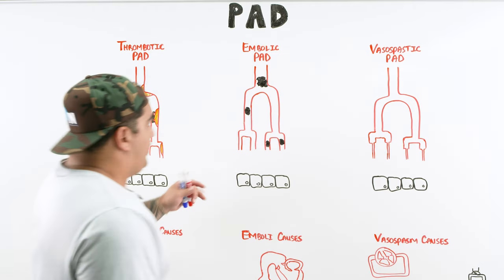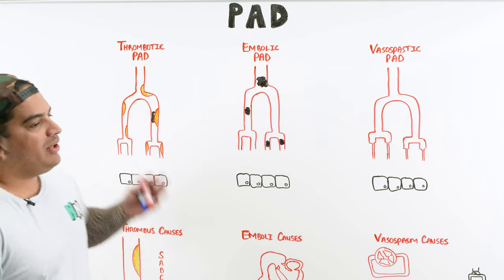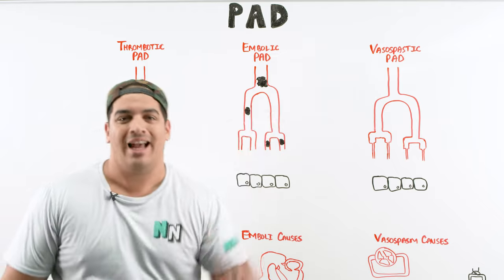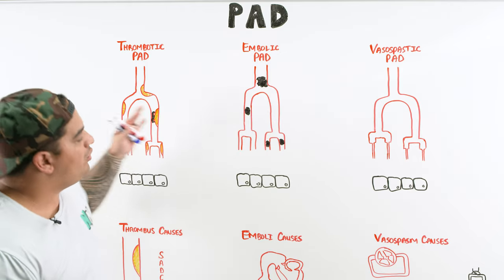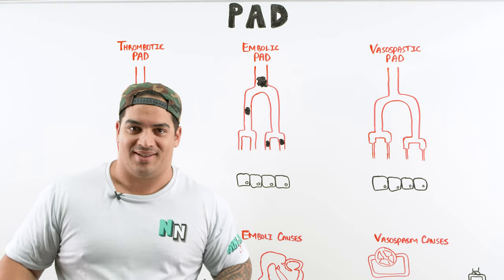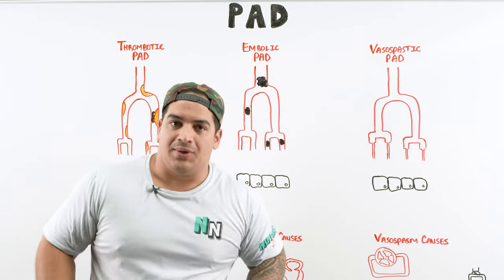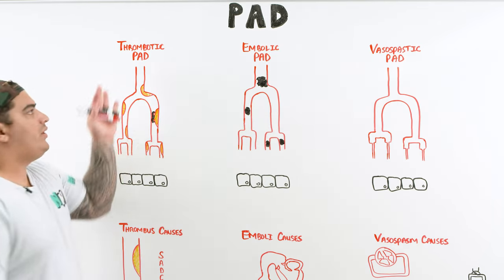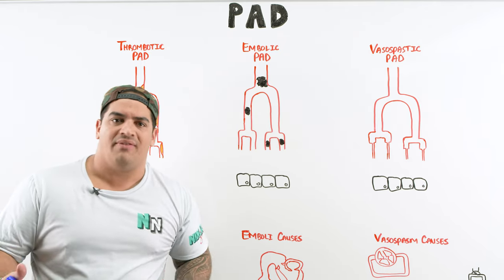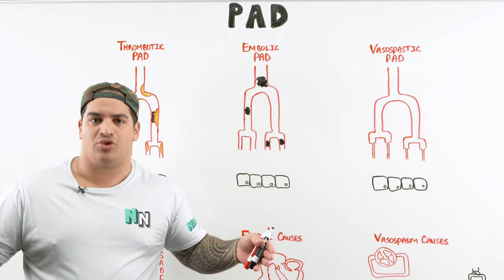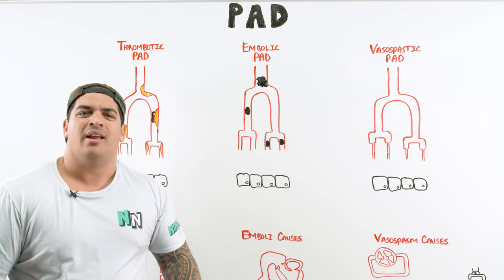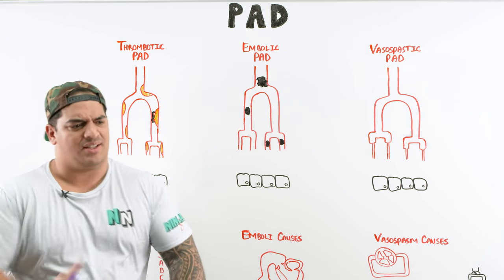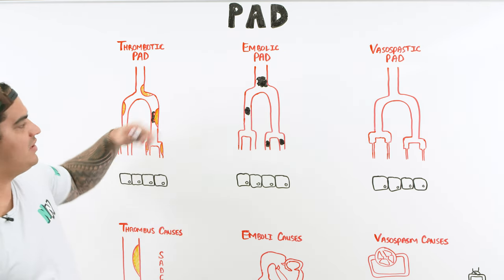PAD — peripheral arterial disease — is a pretty common disease. I want you to think about it as having three particular types, because it explains the pathophysiology and cues you to understand the causes: thrombotic, embolic, and vasospastic. These affect the peripheral arteries of the distal extremities, and it is far more common in the lower extremity vessels than the upper extremity vessels.